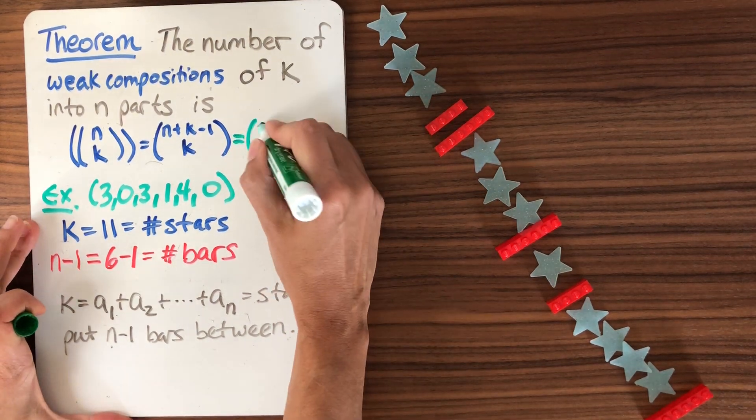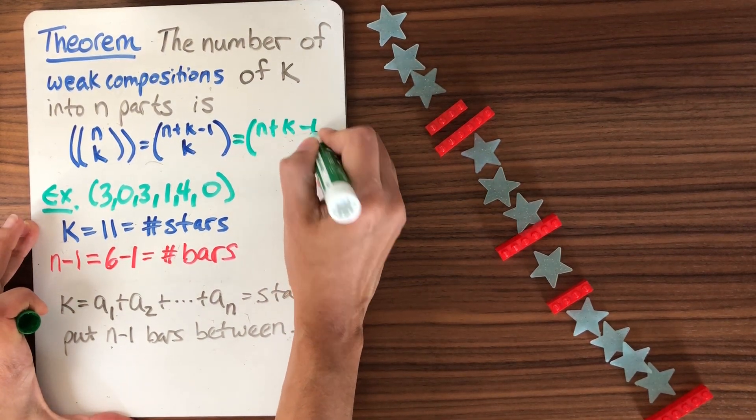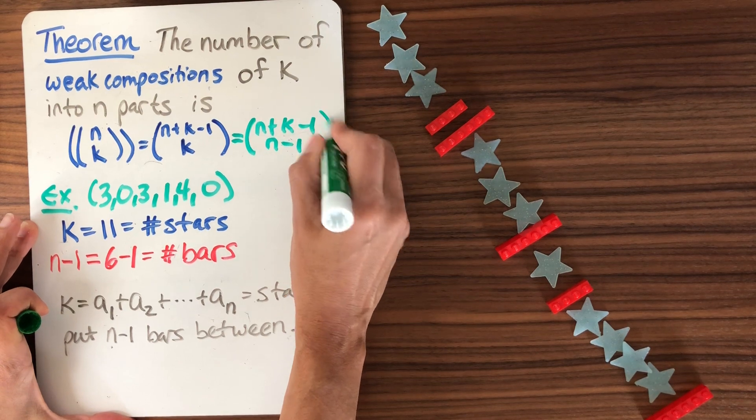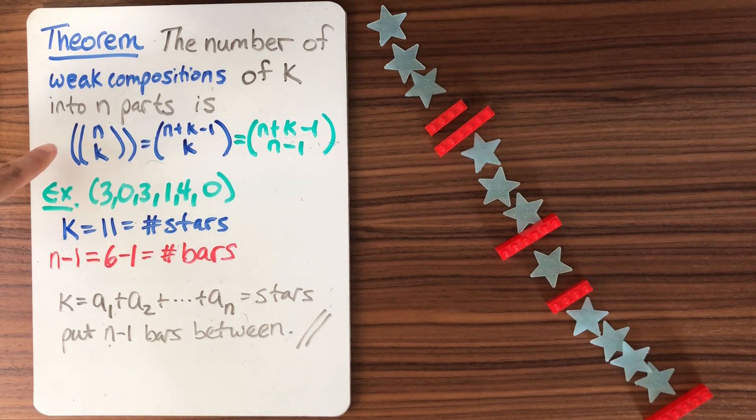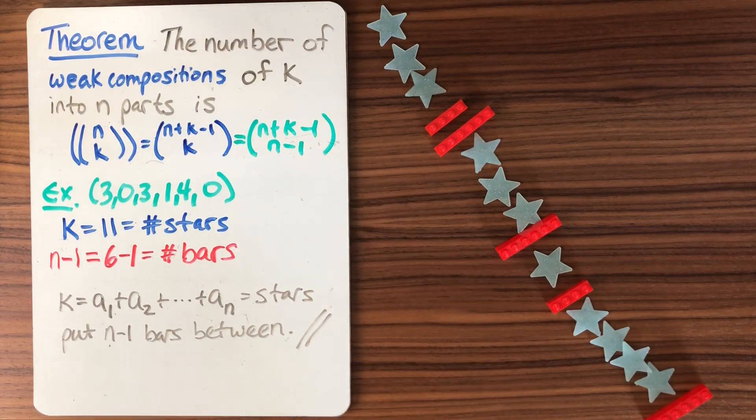So I'll put that one down too. n plus k minus one, choose n minus one, of course, is an equivalent way. So the number of weak compositions of k into n parts is n multi-choose k. And we have this nice combinatorial way to realize it.